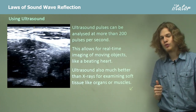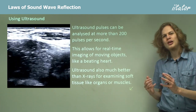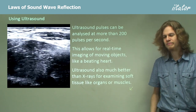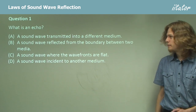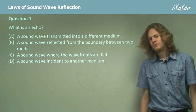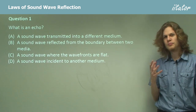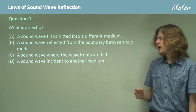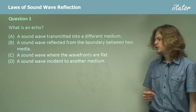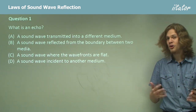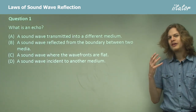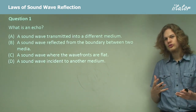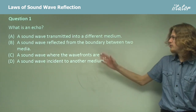That's the end of the theory. We know a bit about ultrasound imaging, echolocation, and sonar. Let's go on to some questions to test your knowledge. Question 1: What is an echo? Is it: A) a sound wave transmitted into a different medium; B) a sound wave reflected from the boundary between two media; C) a sound wave where the wave fronts are flat; or D) a sound wave incident to another medium?